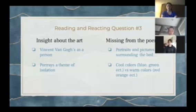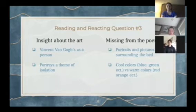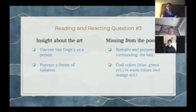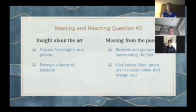Reading and reacting question number three: the poem offers us a look into what Vincent Van Gogh was like as a person. He is described as clumsy but friendly, which suggests he had good intentions but often messed things up. It also highlights the theme of isolation in the art by conveying that he sleeps alone in his room, which is empty. However, the poem fails to detail anything about the busy area surrounding the bed. There seems to be a lot of room for interpretation for the portraits on the wall and above the bed — who are they and why are they in the room? The poem does not acknowledge other aspects of the room. The painting also has a strong use of cool colors which can be interpreted as symbolic of sadness or loneliness.